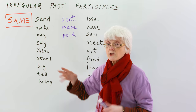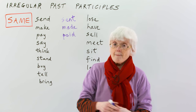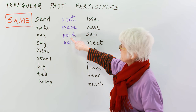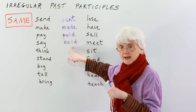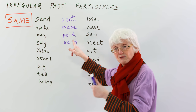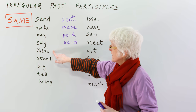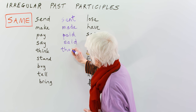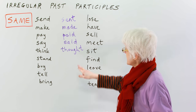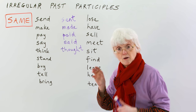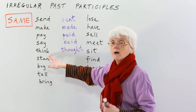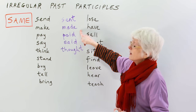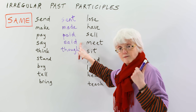To say: yesterday I said. Note the pronunciation — it's 'said,' not 'say'd,' whereas 'paid' is pronounced as written. To think: yesterday I thought. The '-ought' ending appears in several English words. With the present perfect, all of these stay the same: I have sent, I have made, I have paid, I have said, I have thought.